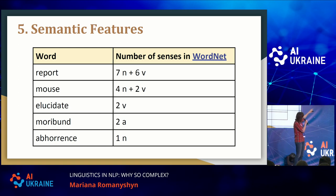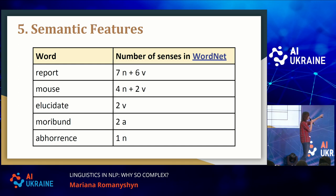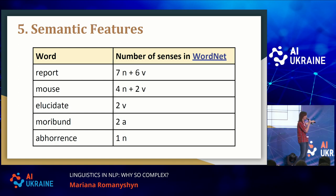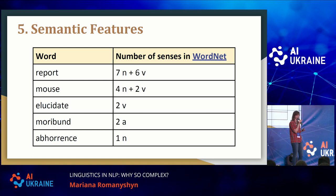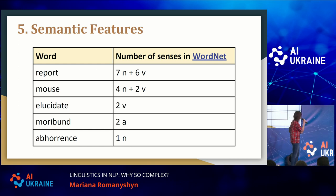Simple words like "report" or "mouse" might have seven meanings as a noun and six as a verb, while complex words like "elucidate," "moribund," or "abhorrence" would have only one or two meanings. So the number of meanings — a very simple feature — could be very important in identifying complex words. You can use any dictionary in any language to do that.